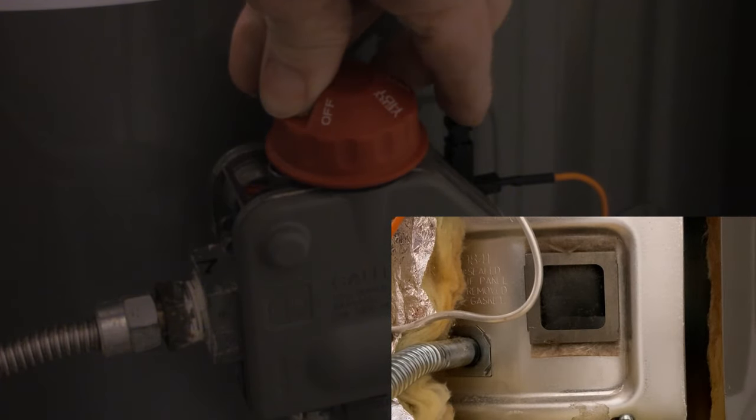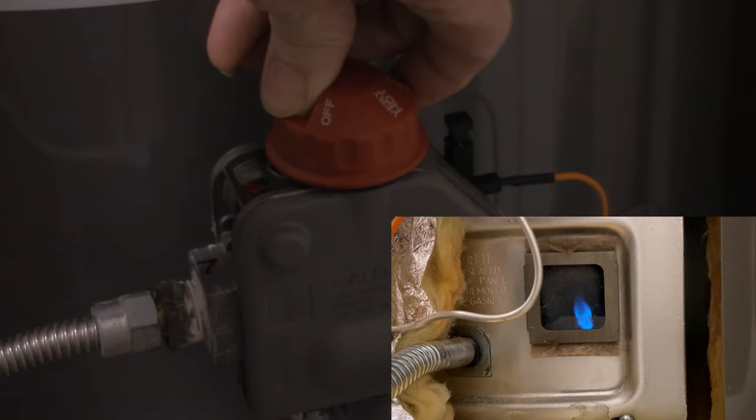So push down on the pilot light, press the igniter, and you should see the pilot light light. So at this point what you're going to do is you're going to hold that pilot light down for about 60 seconds.